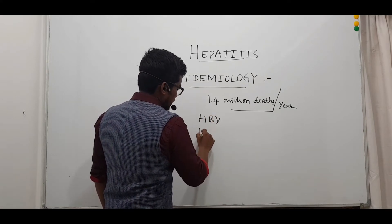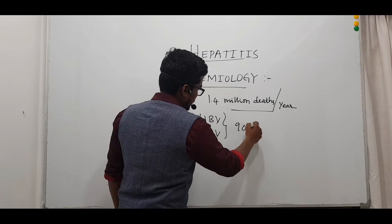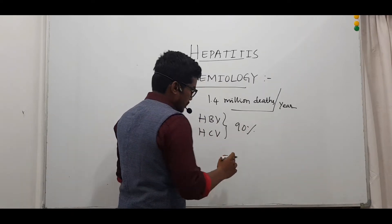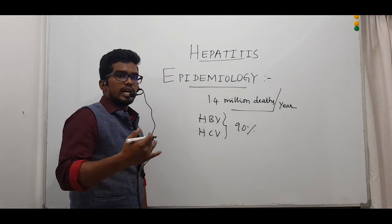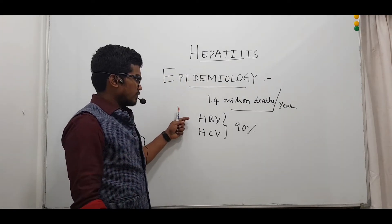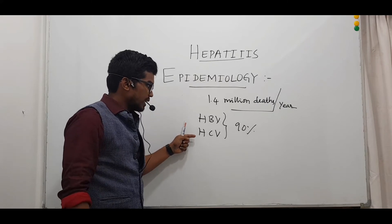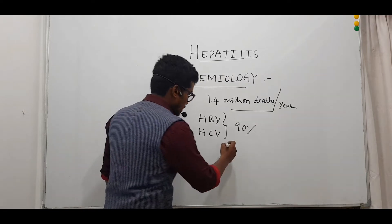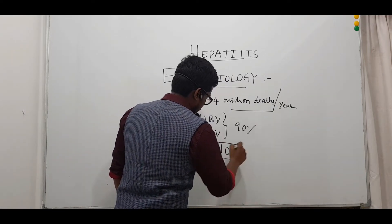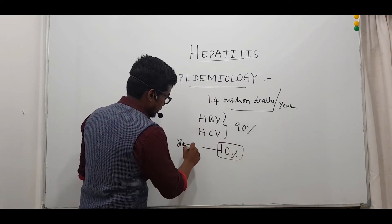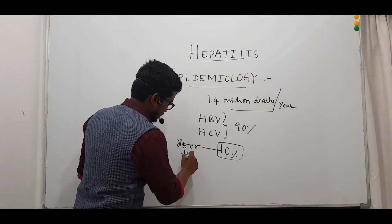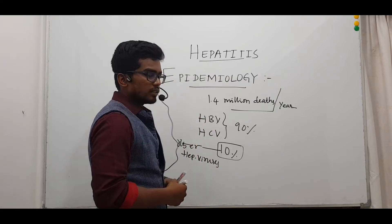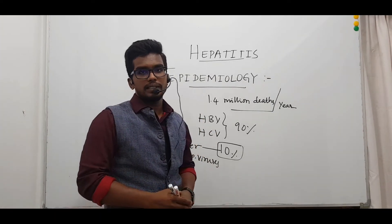The other types — hepatitis D, hepatitis E, and hepatitis G — cause 10 percent of fatalities. So this was a short epidemiology of hepatitis.